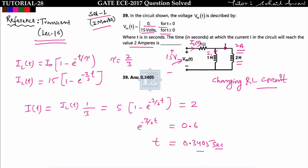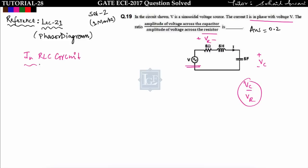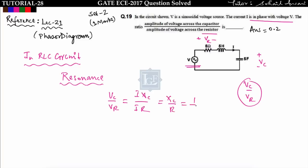Next question: in the circuit, the input voltage is sinusoidal AC and the current i is in phase with voltage v. We have to find the ratio of amplitude of voltage across capacitor to amplitude of voltage across resistor, that is VC upon VR. Since current i and v are in phase, the circuit is at resonance. VC upon VR equals I*XC upon I*R, which equals XC upon R, that is 1 upon omega*C*R.